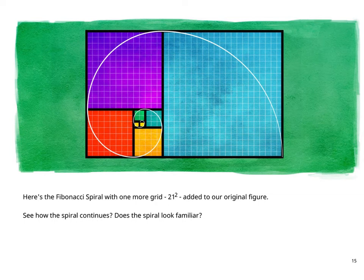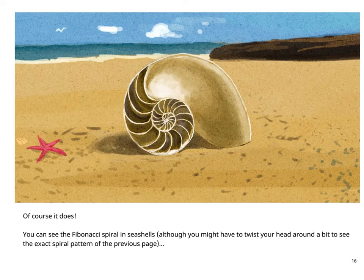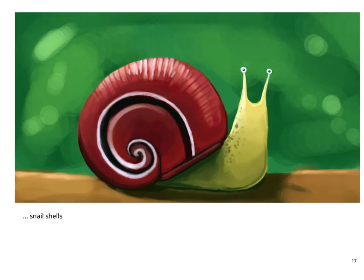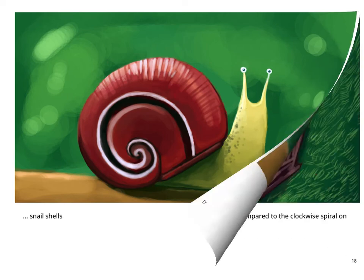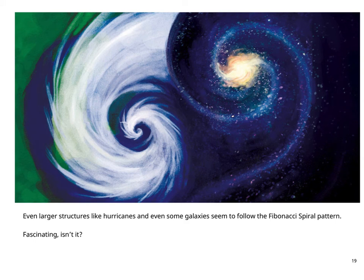What is the link between this spiral pattern created by squared Fibonacci numbers and nature? Well, the exact same Fibonacci spiral can be found in nature. Where? Let's see, shall we? Here is the Fibonacci spiral with one more grid - that is 21² - added to our original figure. See how the spiral continues? Does the spiral look familiar? Of course it does! You can see the Fibonacci spiral in seashells, snail shells, even eggs. See how this spiral goes the other way - that is anti-clockwise as compared to the clockwise spiral. Even larger structures like hurricanes and even some galaxies seem to follow the Fibonacci spiral pattern. Fascinating, isn't it?